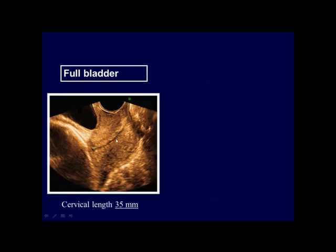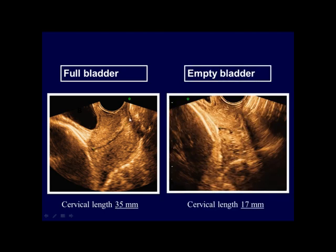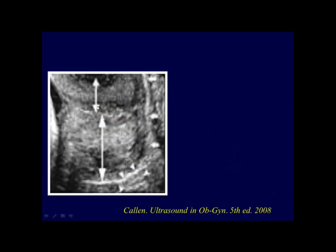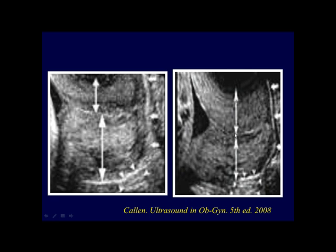In this patient, the cervical length looks normal, measuring about 35 millimeters — but the bladder is full. When the bladder is emptied, the true cervical length is seen to be shorter, measuring only 17 millimeters. In another image, the anterior lip of the cervix is significantly thinner than the posterior lip due to excessive pressure from the vaginal probe; increased echogenicity of the posterior lip also confirms excessive pressure, making the cervical measurement inadequate.